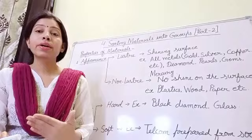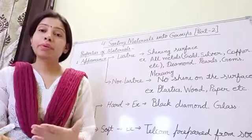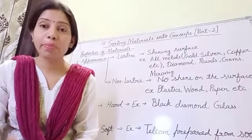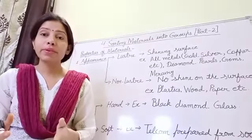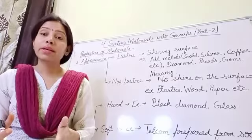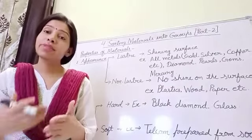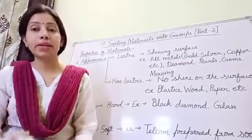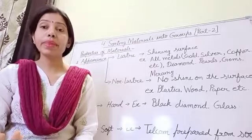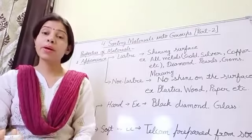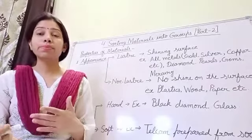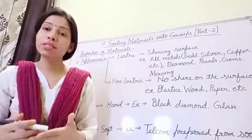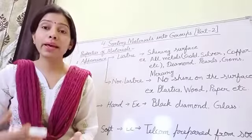A few examples of lustrous materials are aluminum, iron, gold, silver, pearl, and gems. Materials which have this kind of property are called lustrous materials.